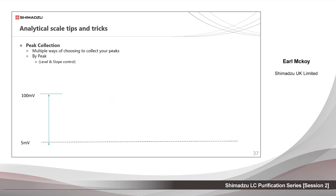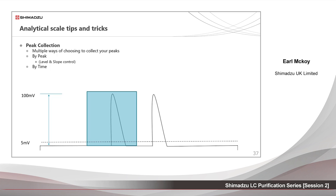By time: this is useful when you are unsure about what cannot be seen by the detector. Offline tests will determine where and if the desired components are present. This tells the fraction collector to collect in a time window — for example, starting at 5 minutes and stopping at 10 minutes. Time per tube can then be used to divide into smaller slices.